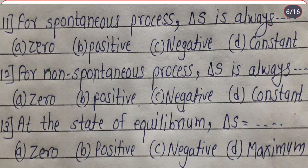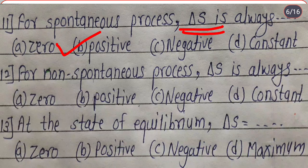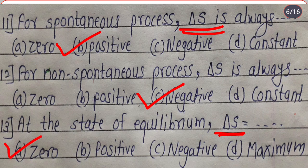For a spontaneous process, ΔS is always positive — it is opposite to that of ΔA and ΔG. For a non-spontaneous process, ΔS is negative. At the state of equilibrium, ΔS is always zero or minimum. Remember that at the state of equilibrium, ΔS, ΔA, as well as ΔG are always zero or minimum.